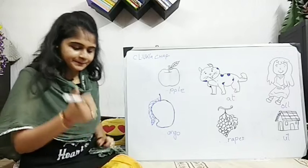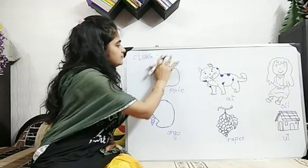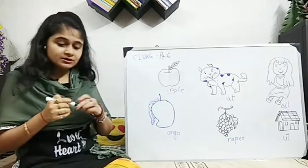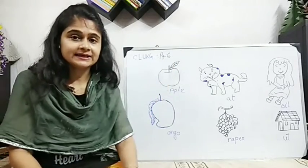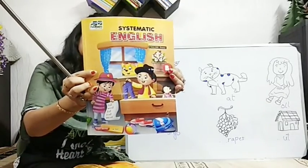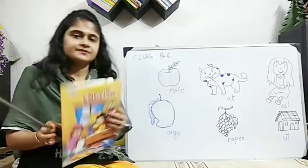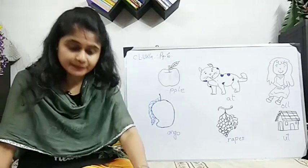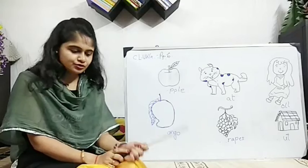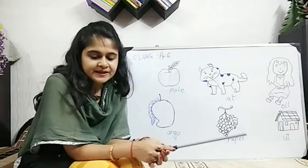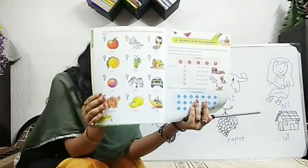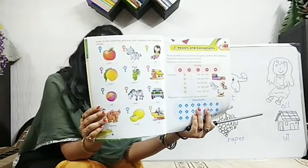What will we do today? Okay, you have got a book called Systematic English B. This book is there with you. All of you take out this book quickly. Then you will open to page 6. What is the page number? 6. You will open to page 6, okay? And here, see, so many pictures are given. Can you see these pictures which are given in your book?